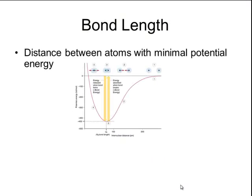Bond length is defined as the distance between the atoms that has the minimum amount of potential energy. Here is another potential energy diagram showing atoms combining together.